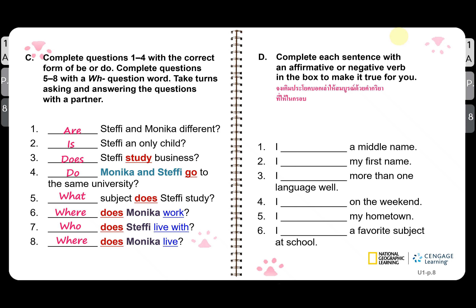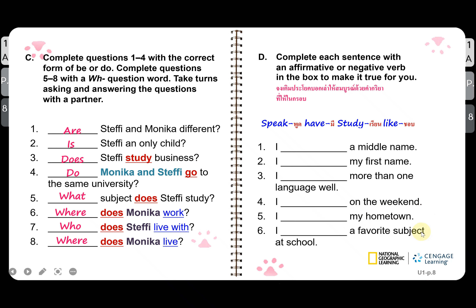Complete the sentences with affirmative or negative verbs from the box — speak, have, study, like — to make them true for you. For example: I have or don't have a middle name. I like or don't like my first name. I speak or don't speak more than one language. I study or don't study a favorite subject at school. It depends on what is true for you.